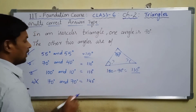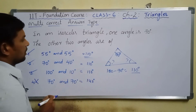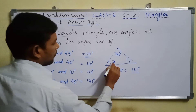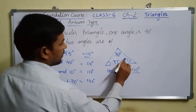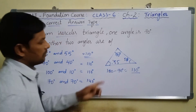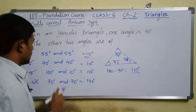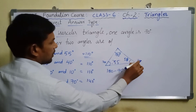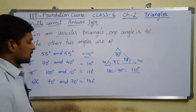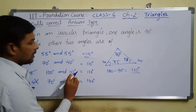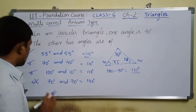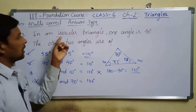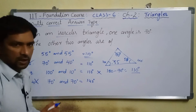Checking isosceles condition: 55° and 55° gives two equal angles, so it is isosceles. 70°, 70°, and 40° also gives two equal angles — isosceles. 100°, 10°, and 70°: no two angles are equal, so this is not isosceles. Therefore option three is not possible. Options one and two are correct.